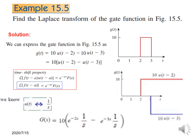Similarly, the second term u(t minus 3) gives e raised to the power minus 3s times F(s), where F(s) is 1 over s. This is the answer. So this is one way of solving it; there is another way that we will discuss.